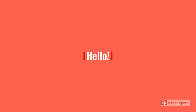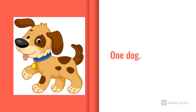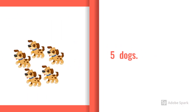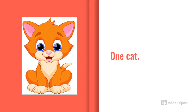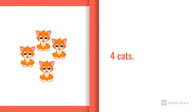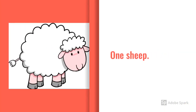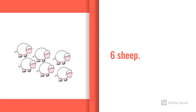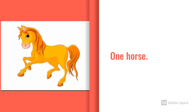Hello kids, let's count and say how many dogs are there: one dog, five dogs. How many cats? One cat, four cats. How many sheep? One sheep, six sheep. How many horses? One horse.